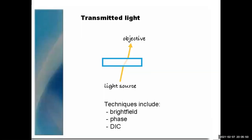Let's look at transmitted light. The light has to go through the specimen itself, which has to be fairly thin — hence microtomy, hence histotechs. Either choose a thin specimen or have a histotech cut it for you. The light source is on one side of the specimen and the objective, which collects the light and the image, along with your camera, are on the other side. Techniques that use transmitted light include regular bright field, phase, and DIC.